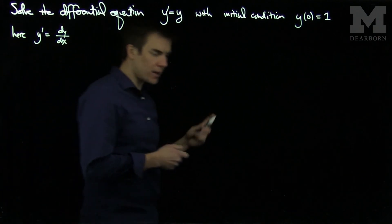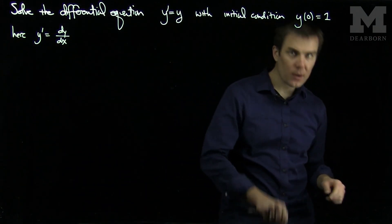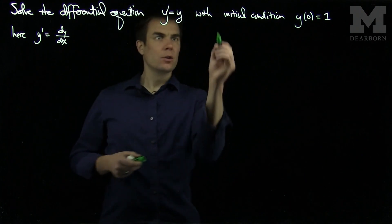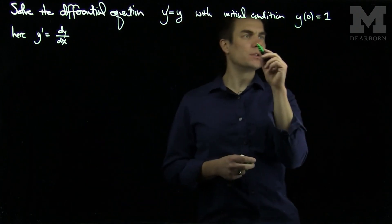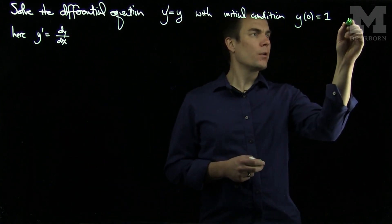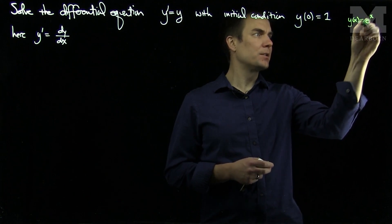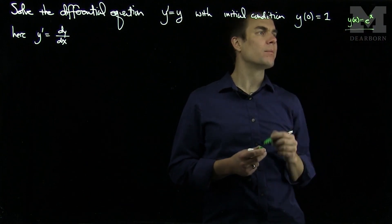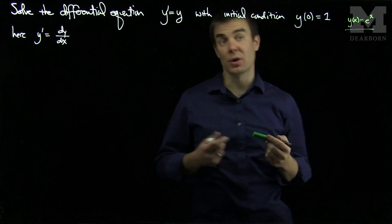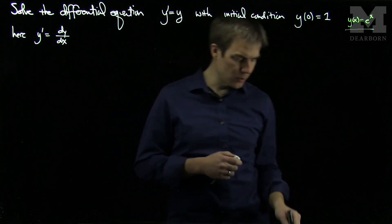We actually know just by inspection that if I want to find a function who is its own derivative and when you plug in 0 you get 1, we know the answer is y of x should just be e to the x because e to the x is its own derivative and when you plug in 0 to e to the x you get 1. So we know that this function will be a solution.